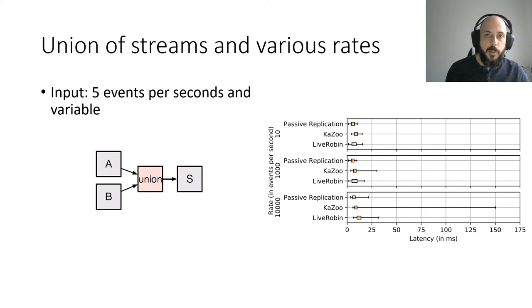For all configurations, imbalance results in higher latency variability. We can note that Kazoo's 99th percentile performance degrades a lot with higher ingestion rate, while LiveRobin remains close to passive replication.